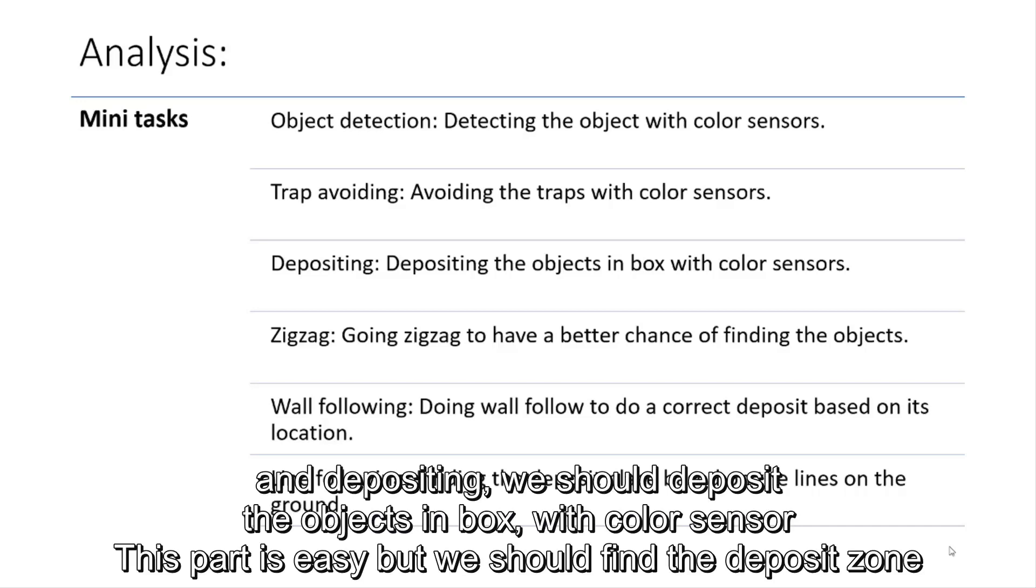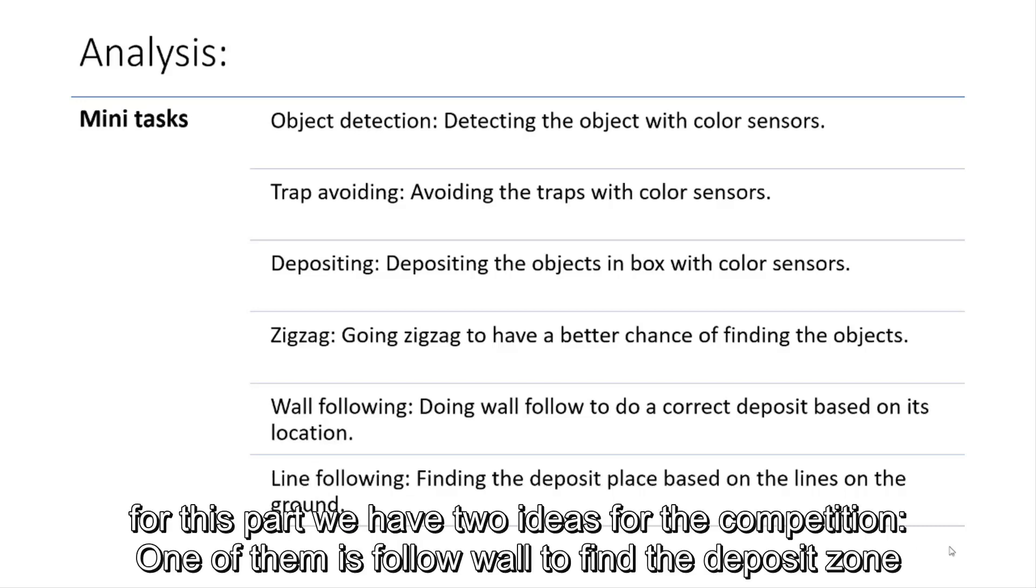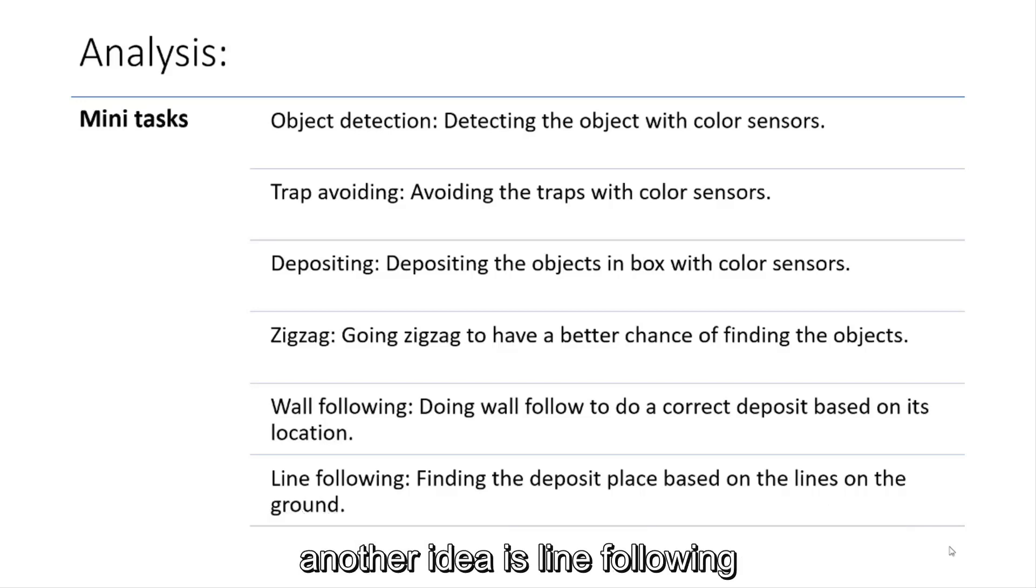And depositing, we should deposit the object in both the color sensor. This part is easy, but we should find the deposit zone. For this part, we have two ideas for the competition. One of them is wall following to find our deposit zone. Another idea is line following. For line following, we follow the markers.